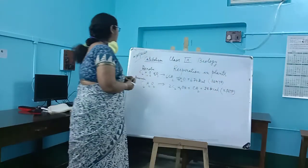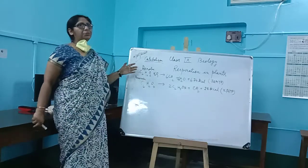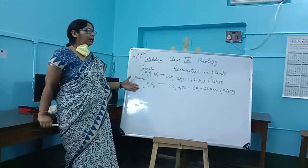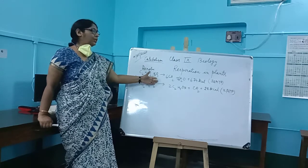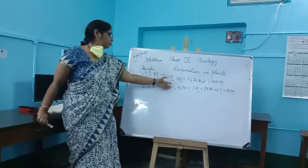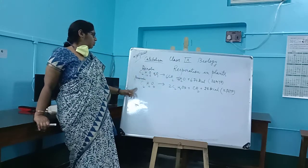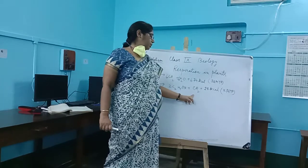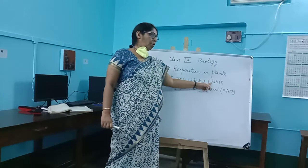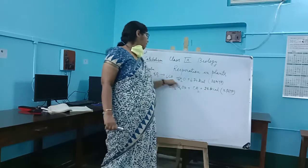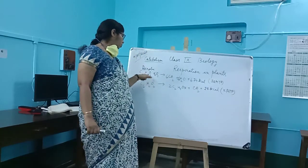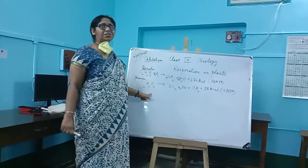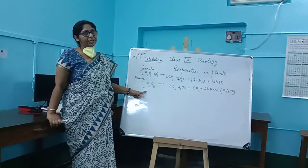There are several differences between aerobic and anaerobic respiration. In aerobic respiration, oxygen is utilized and it produces carbon dioxide, water vapour, etc. In anaerobic respiration, oxygen is not utilized and it produces ethyl alcohol and carbon dioxide. More energy is formed in aerobic respiration; less energy is formed in anaerobic respiration. In aerobic respiration there is complete oxidation of glucose.